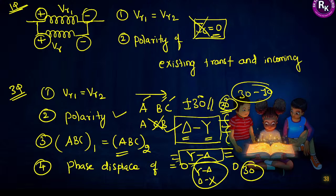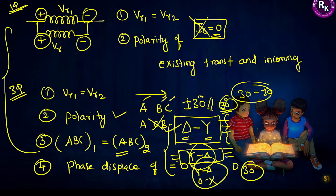You can expect this type of question often in upcoming exams. If the existing transformer is delta-star, the perfect matching for the incoming transformer is star-delta. If the existing transformer is star-delta, the incoming transformer should be delta-star. These are all the mandatory conditions to perform parallel operation for both single-phase and three-phase transformers.